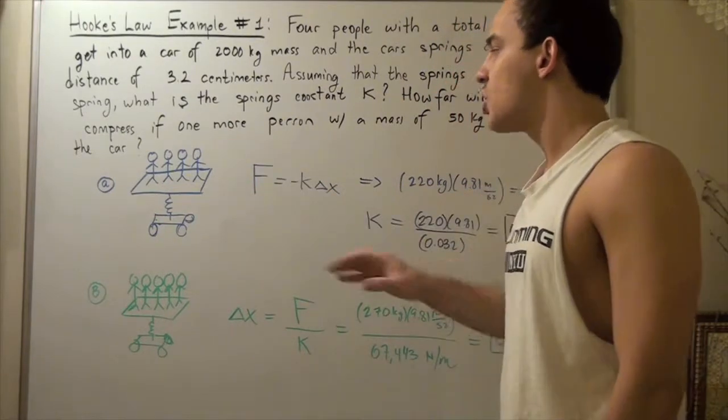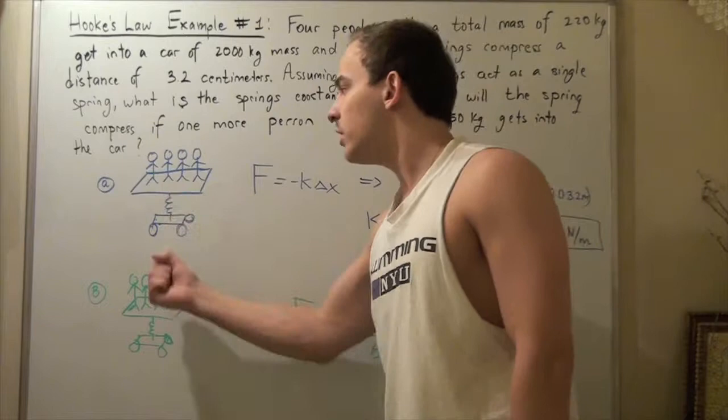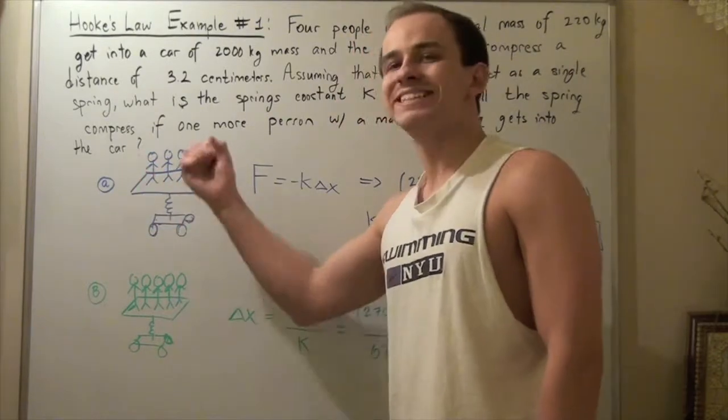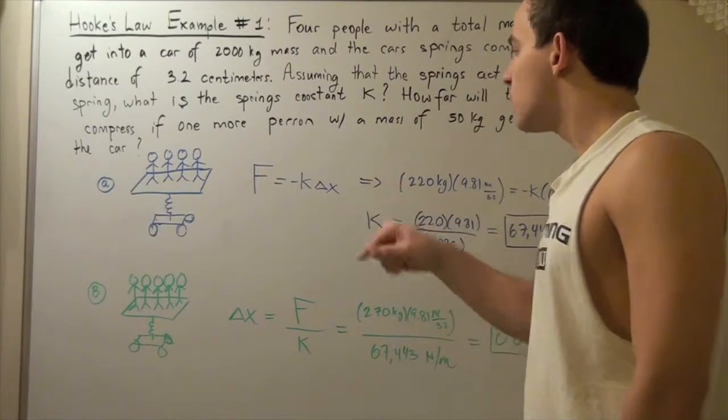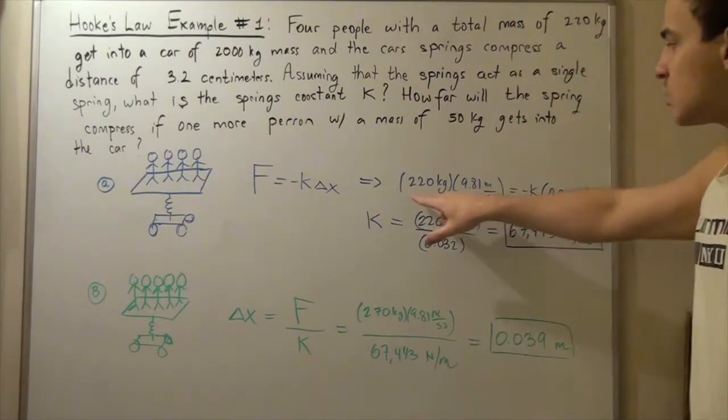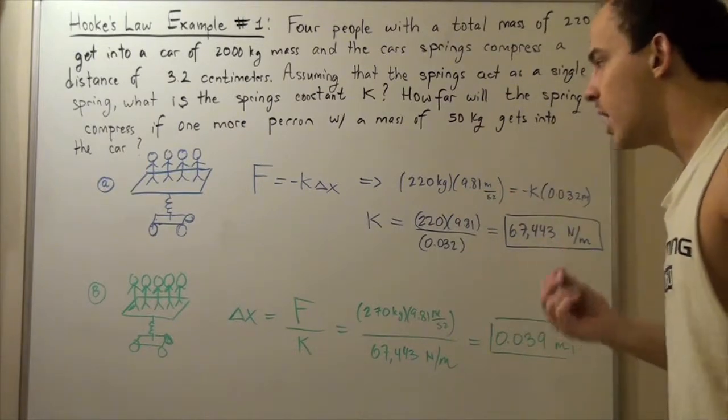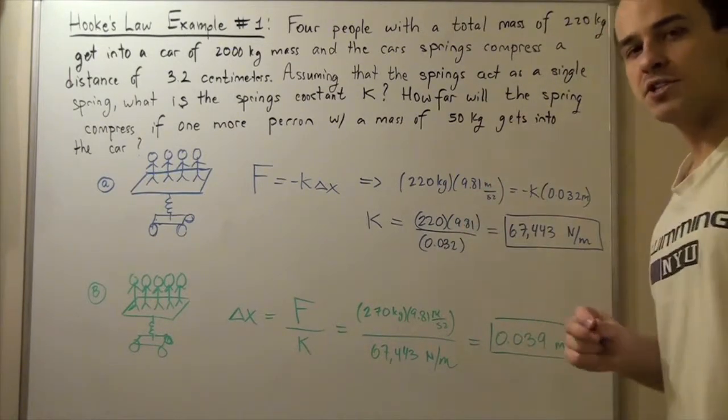So what is the force in this case? The force is the force of gravity that's pulling these four people down. So the force is simply m times g. In this case, our mass is the total mass 220, so 220 kilograms multiplied by our gravitational constant, 9.81 meters per second squared.